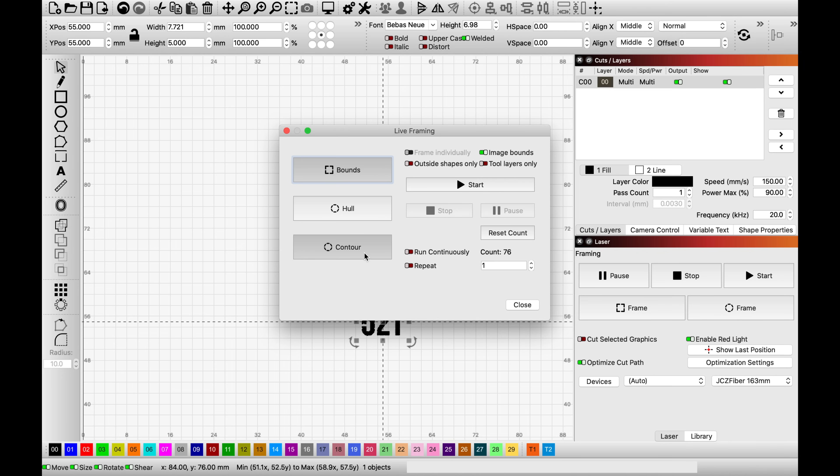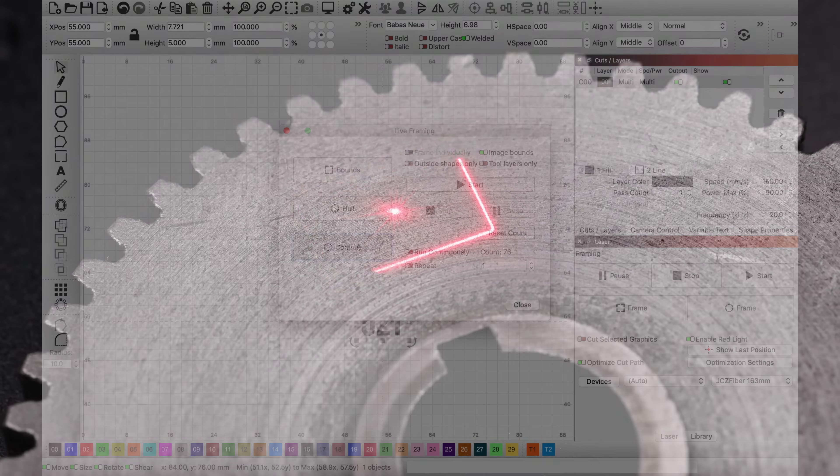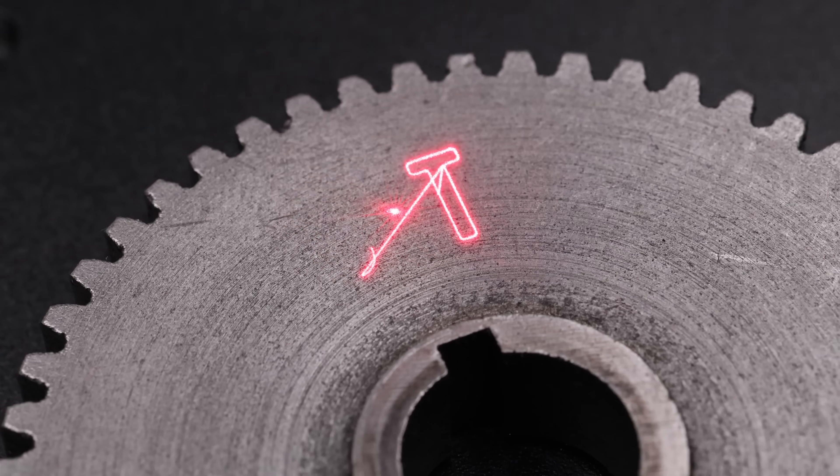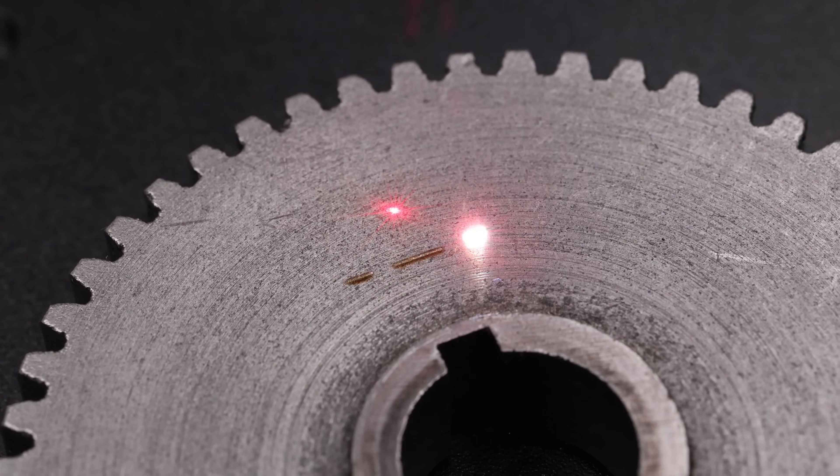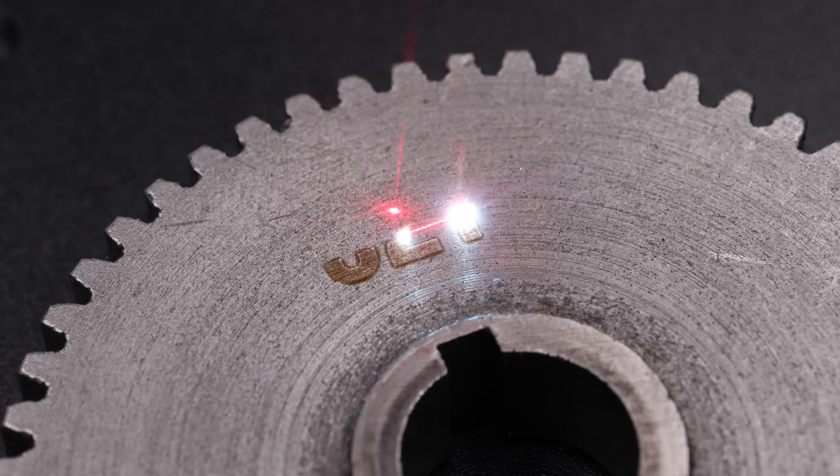Next, I select this frame button that projects with a low powered diode laser, either a bounding box or a contour of the shape to be burned onto the work piece, allowing us to position the engraving somewhat accurately.